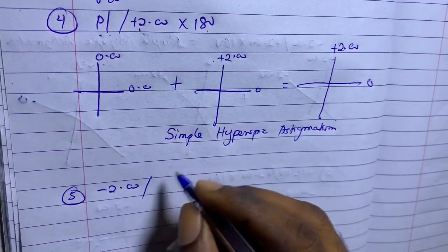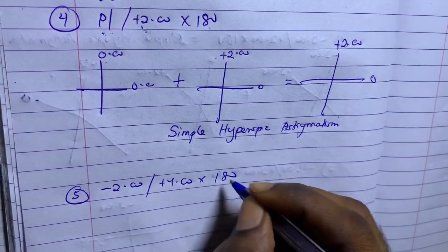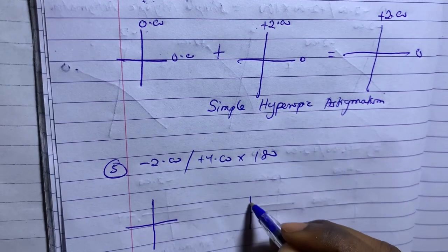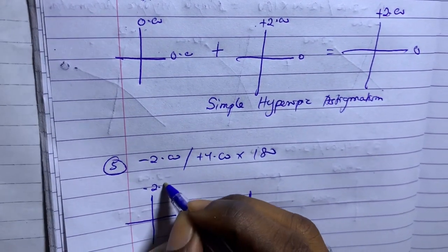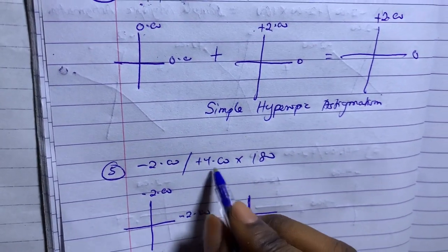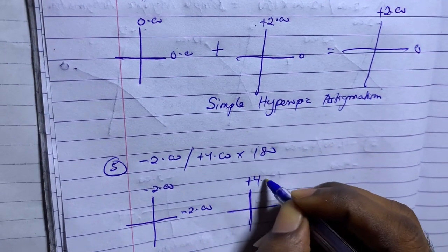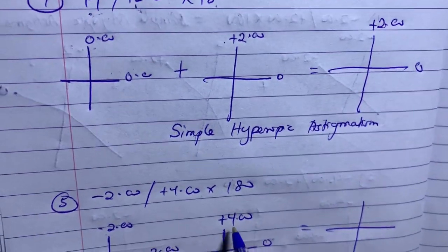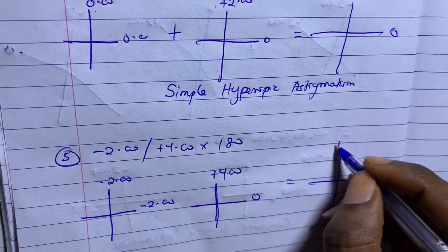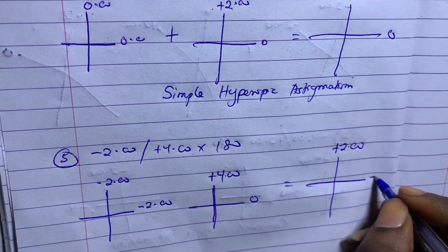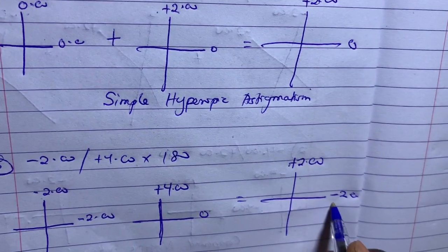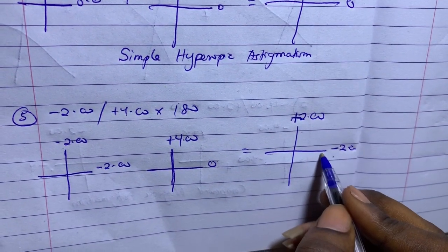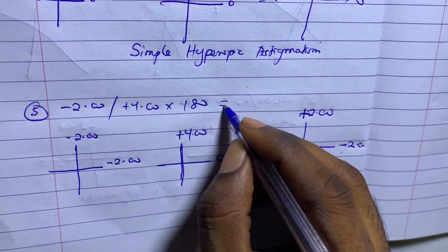Example five: minus two combined with plus four axis 180. Draw the optical cross. For the sphere, minus two appears on each meridian. For the cylinder, plus four axis 180 means the power is at 90. On my final cross: minus two plus four gives plus two, and minus two plus zero gives minus two. So I have plus two on one meridian and minus two on the other — one is falling behind the retina and one is falling in front. Since I have both plus and minus, this becomes mixed astigmatism.